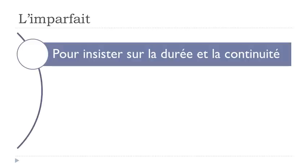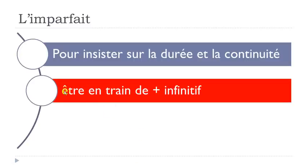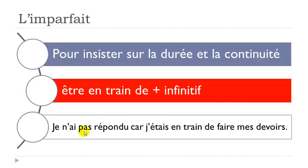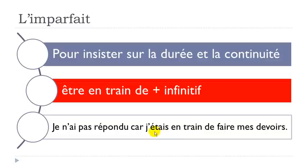If you want to insist on an ongoing action, use the structure 'être en train de' plus the infinitive. Example: 'je n'ai pas répondu' — I didn't answer, in passé composé — 'car j'étais en train de faire mes devoirs' — because I was doing my homework. 'Faire mes devoirs' lasts a while, which is why we use 'j'étais en train de faire', with être at the imparfait form.